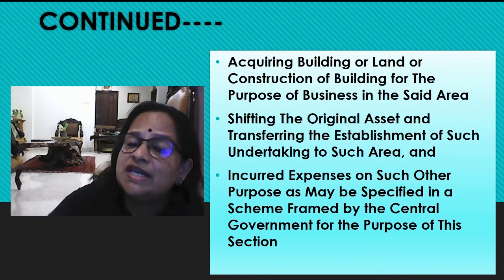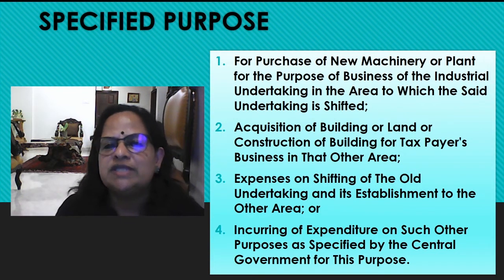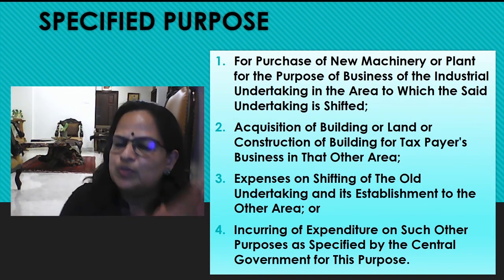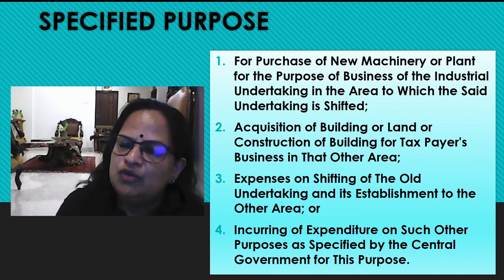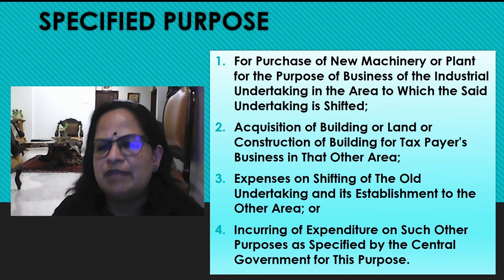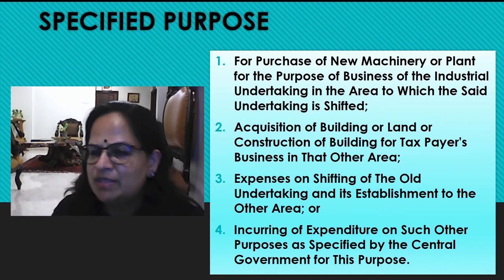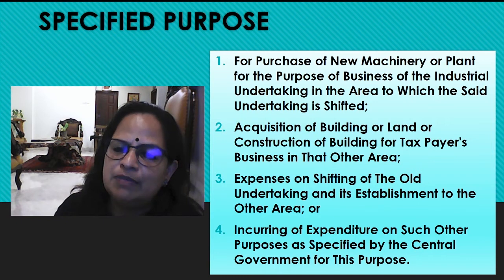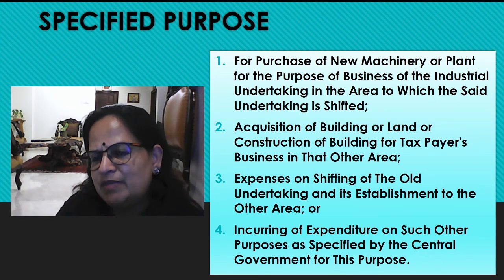The central government can give exemption for these expenses of shifting. Specified purposes include: purchase of new machinery or plant for the purpose of business of the industrial undertaking in the area to which the undertaking is shifted; acquisition of building or land or construction of building for the taxpayer's business in that other area; expenses on shifting of the old undertaking and its establishment to the other area; and incurring of expenditure on such other purpose as specified by the central government. These expenses are for shifting from the present place to the new place.